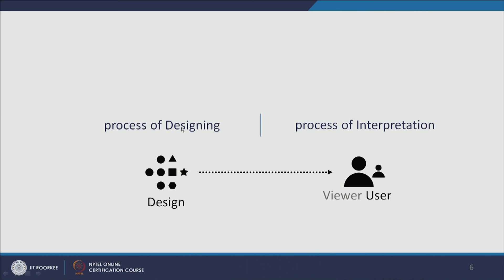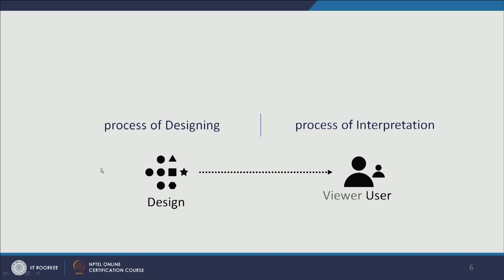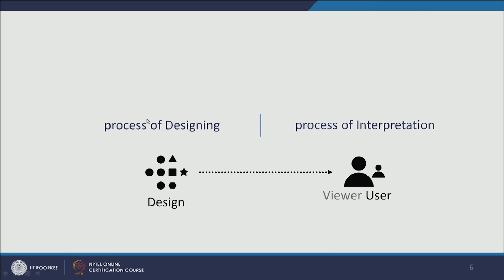So it has two processes: the process of designing and the process of interpretation. For designers, the process of designing happens first, but that has to be based on an understanding of the interpretation. The designer has to know what the process of interpretation is, how people think and perceive — but still the process of designing comes first at the designer's end, and then they leave it to the user and how they interpret. For the user, they first start processing, first start interpreting, and then understand what the design is.